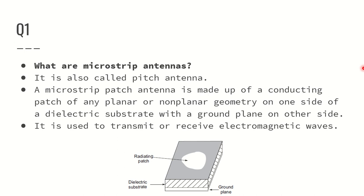What are microstrip antennas? Microstrip antennas are also called patch antennas. There are two very important points to remember here. First, the usage of the dielectric substrate. You can see that here — the dielectric substrate, and we have a ground plane. We also have a radiating patch: one side is the dielectric substrate, and another side is the ground plane. It is made up of a conducting patch of any planar or non-planar geometry on one side of a dielectric substrate.